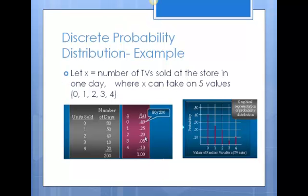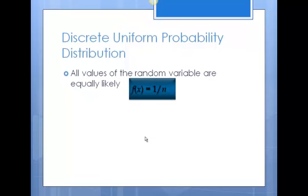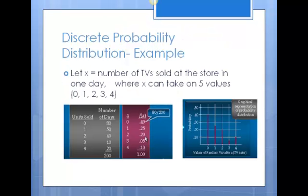This distribution is not uniform because the number of occurrences for each observation is not the same. If the distribution were uniform, all values of the random variable would be equally likely, and the probability would be 1 over the number of observations. That is not the case here because our occurrences in each state are different — on 80 days we sold 0 TVs, so out of 200 days, there is a 40% chance we will sell 0 TVs on any given day.